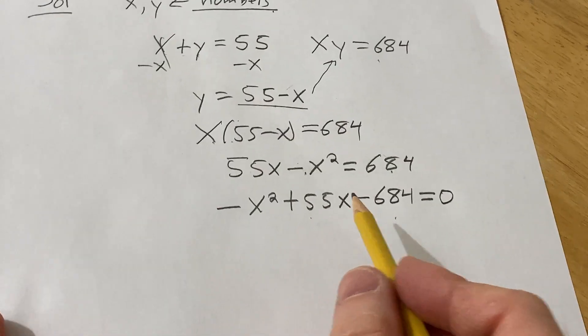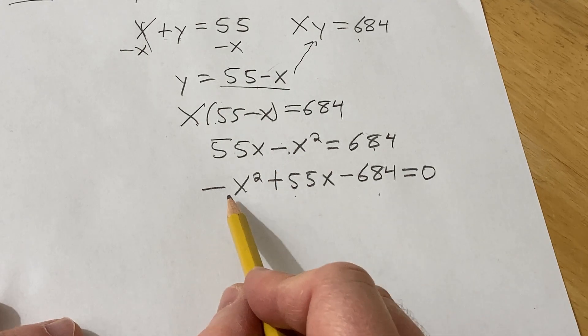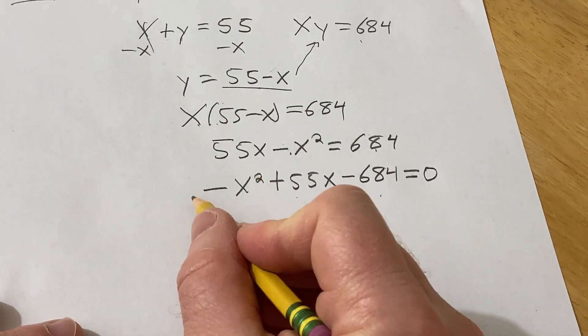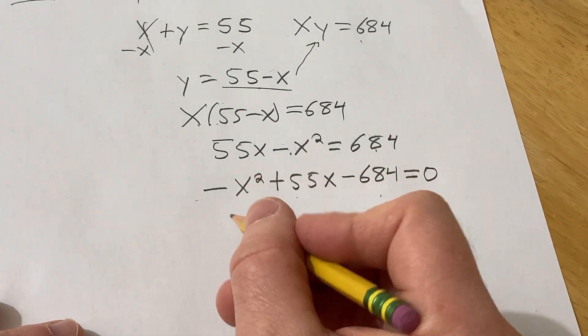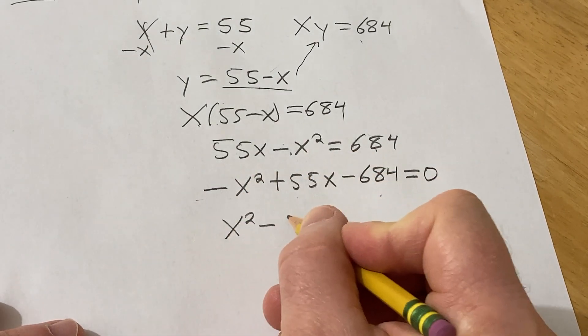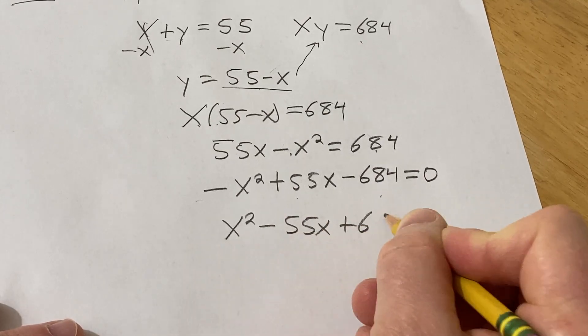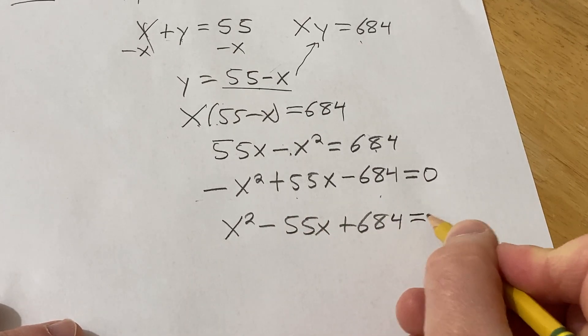This is pretty tough to factor, but it's especially tough to factor with this minus sign here. So I'm just going to multiply everything by negative one, so we can basically just switch the signs. So this is x squared minus 55x plus 684, and that's equal to zero.